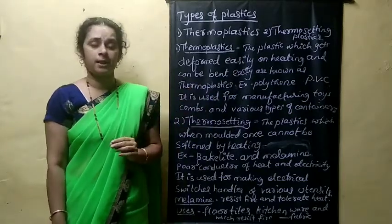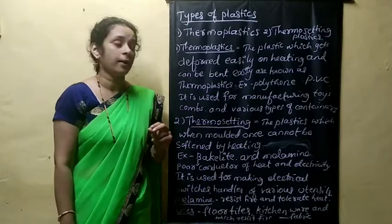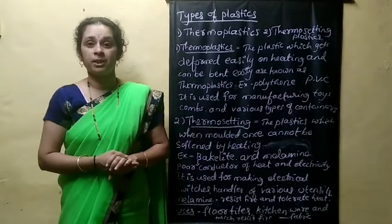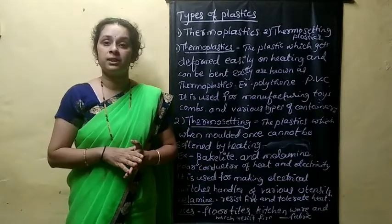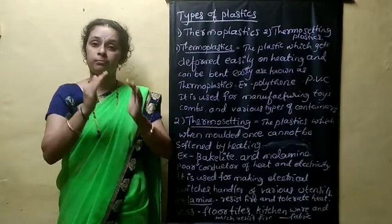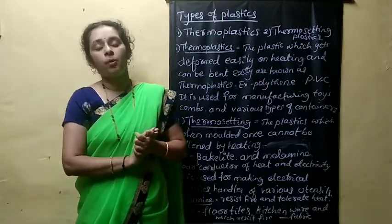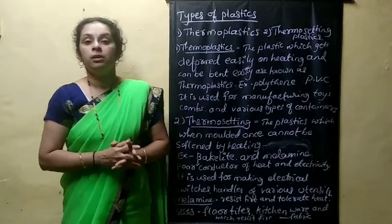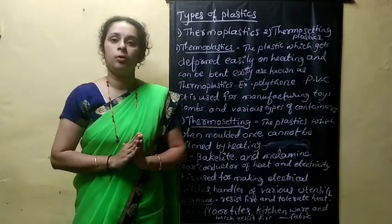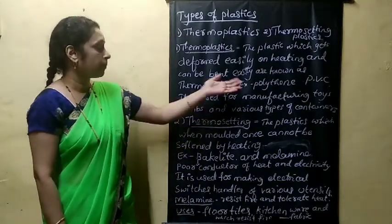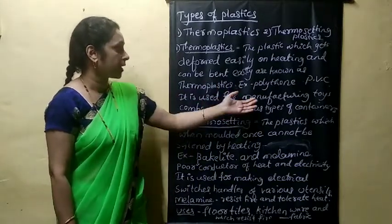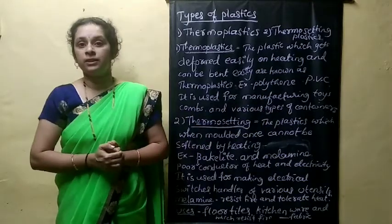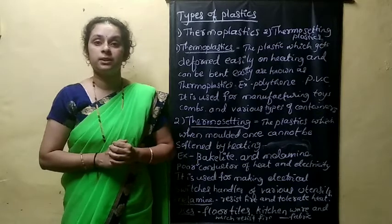Examples of thermoplastics are polythene and PVC. PVC stands for polyvinyl chloride — many vinyl chloride molecules combine to form polyvinyl chloride. Both polythene and PVC are examples of thermoplastics. They are used in manufacturing toys, combs, and various types of containers.